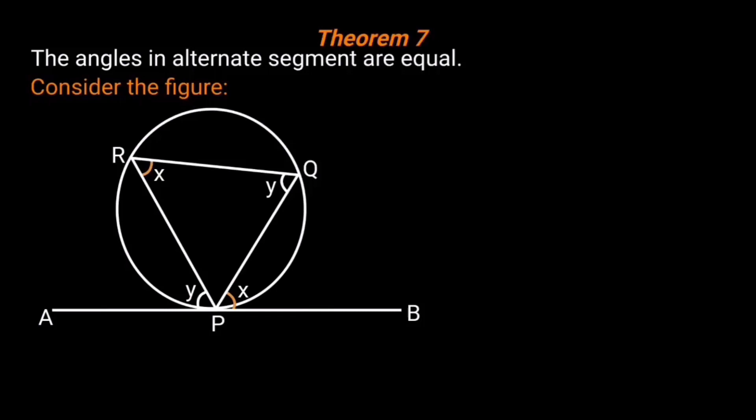In this figure, the chord PQ divides the circle into two segments. Then, the tangent AB is drawn such that it touches the circle at P. Hence, angle QPB is equal to the angle in the alternate segment, angle QRP.